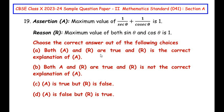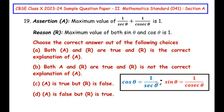Question 19 is from the Introduction to Trigonometry chapter. The assertion is: the maximum value of 1/secθ + 1/cosecθ is 1. The reason given is: the maximum value of both sinθ and cosθ is 1. We know that secθ and cosecθ are the reciprocal trigonometric ratios of cos and sine. So 1/secθ can be written as cosθ and 1/cosecθ can be written as sinθ.